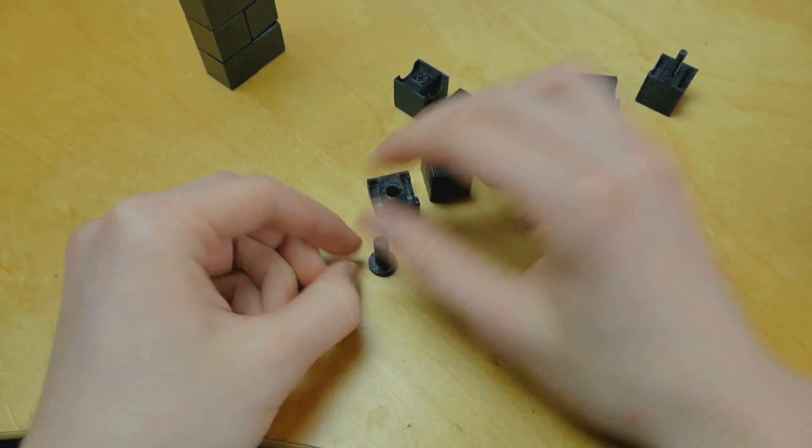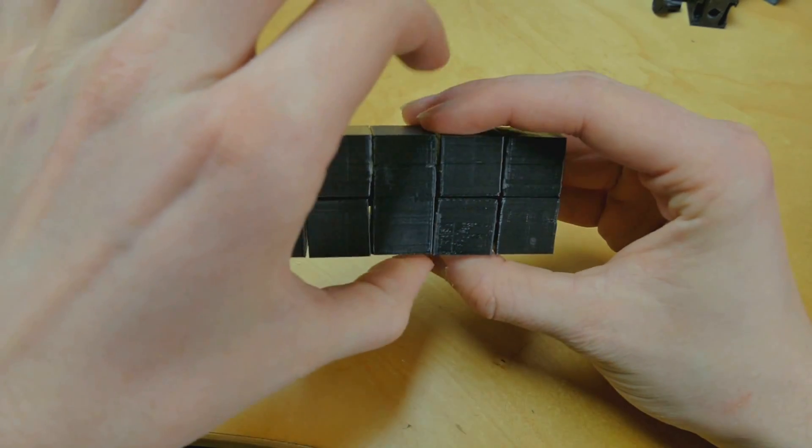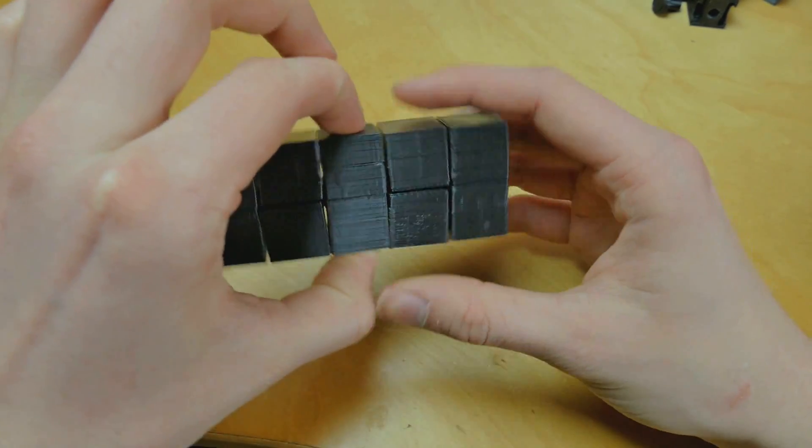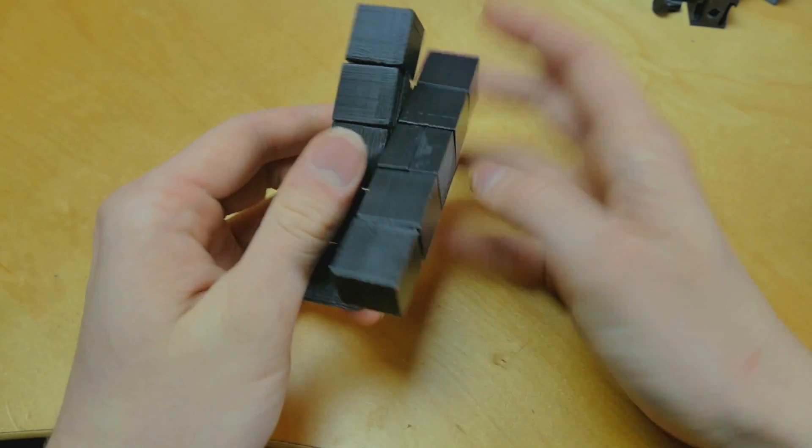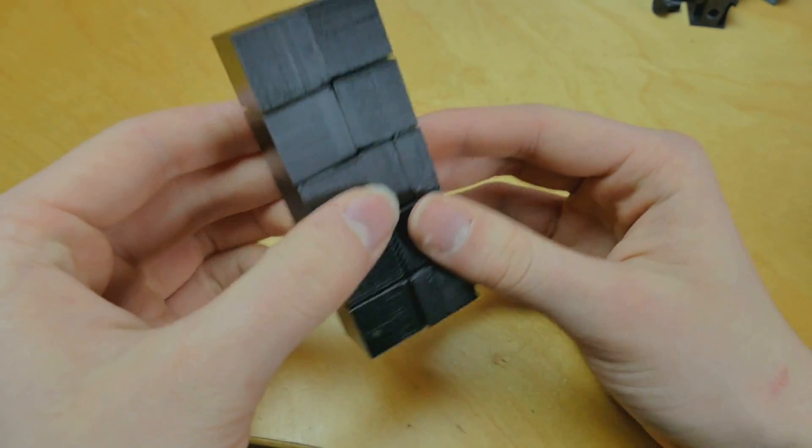So I finally settled with a square pin design which simply uses friction to keep the two together. So this is actually not glued together except this cap is glued on, but it's not actually holding the puzzle together, it's just hiding the pin.